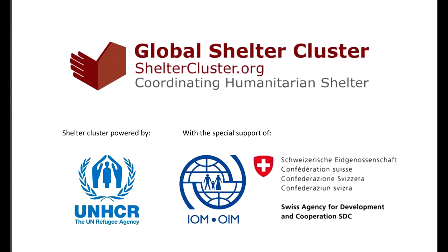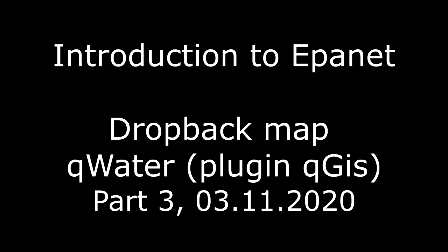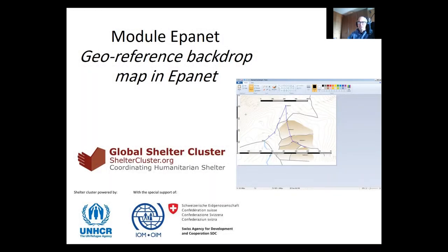Welcome to everyone. Today we are going to speak about EpaNet — the water supply system based on the EpaNet software. This is the third and last part of a three-day webinar. In the first part, two weeks ago, we saw how to draw the network and do a simple analysis. Last week we saw how to do time analysis — the behavior changing over time. Today we will see how to develop a backdrop map and how to use Quantum GIS with EpaNet. There are three presentations because we might have different approaches.